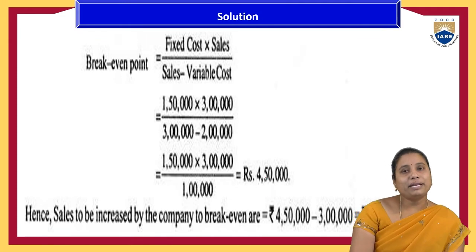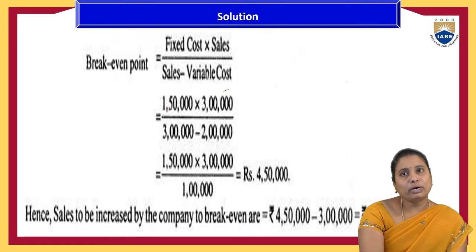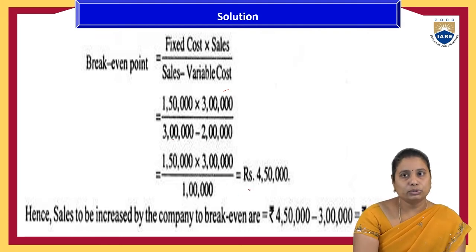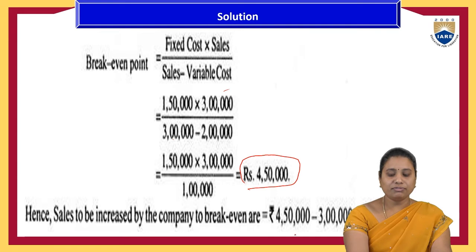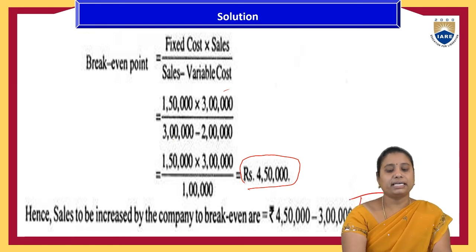BEP in terms of sales = fixed cost × sales ÷ (sales − variable cost) = ₹1,50,000 × ₹3,00,000 ÷ (₹3,00,000 − ₹2,00,000) = ₹4,50,000. To reach the break-even sales of ₹4,50,000 from existing sales of ₹3,00,000, the company must increase sales by ₹1,50,000.